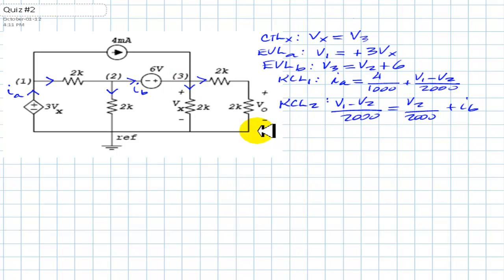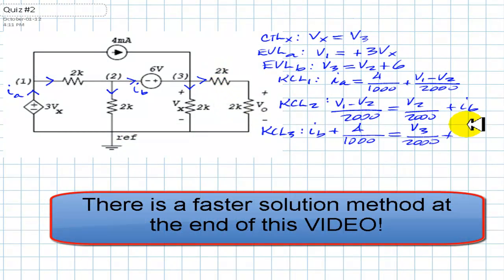Last, the equation for node 3. KCL3. Four terms. 1, 2, 3, and 4. IB arrives in the node. And from the top, 4 mA. For the convenience of the calculator, again, I write 4 over 1000. The current in this other R branch is V3 minus the voltage of the reference, zero volts, divided by 4 kOhm. V3 over 4 kOhm. And that is the set of equations we need to solve for.